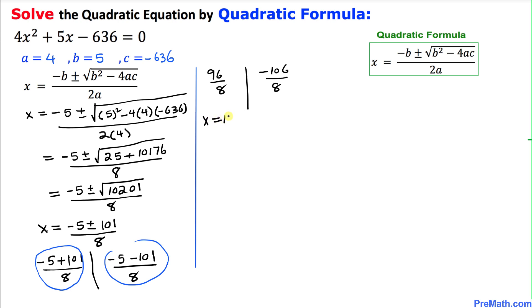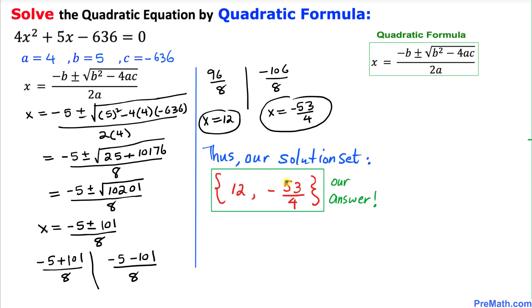If we simplify the first one, we are going to get x equals positive 12, and the second one when we reduce it gives us x equals negative 53 over 4 as our two solutions. Here is our solution set, and that is our final answer.